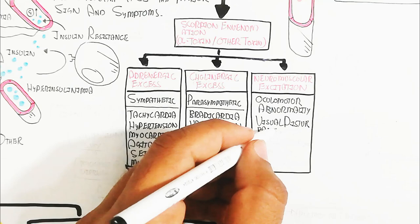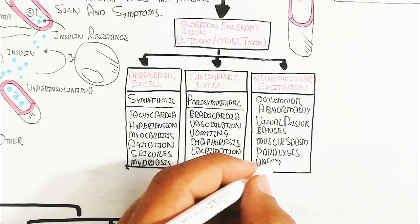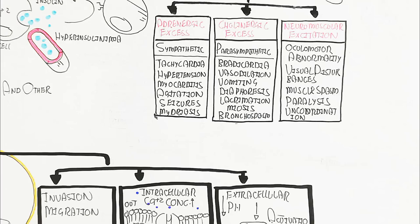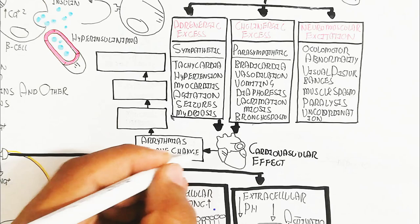Visual disturbances, muscular paralysis, and incoordination can lead to seizures. Essentially, the sympathetic and parasympathetic nervous systems collapse together and stop functioning properly, causing many complications. Cardiovascular effects include arrhythmias and T-wave changes on ECG, myocardial depression, and hypotension.